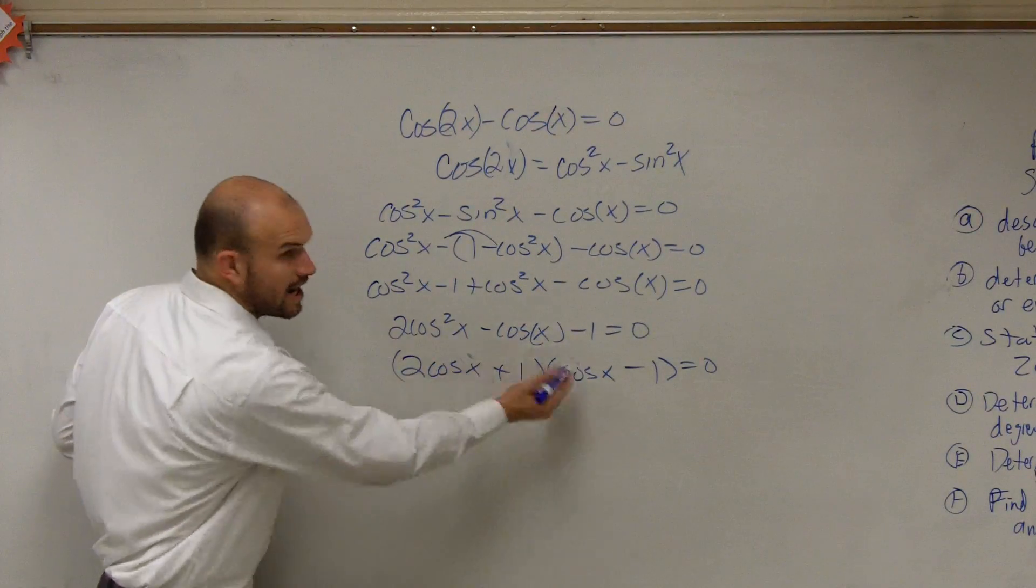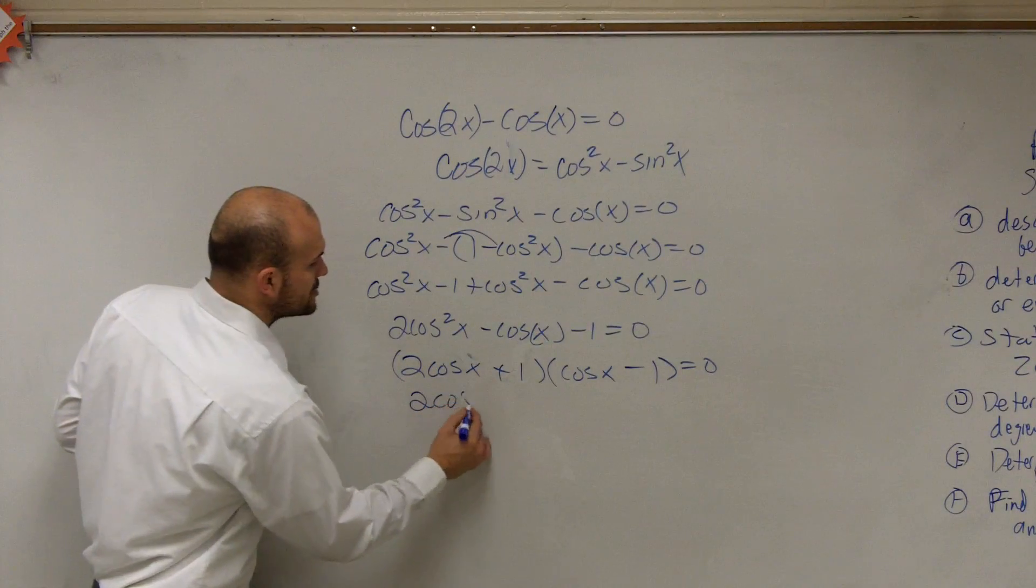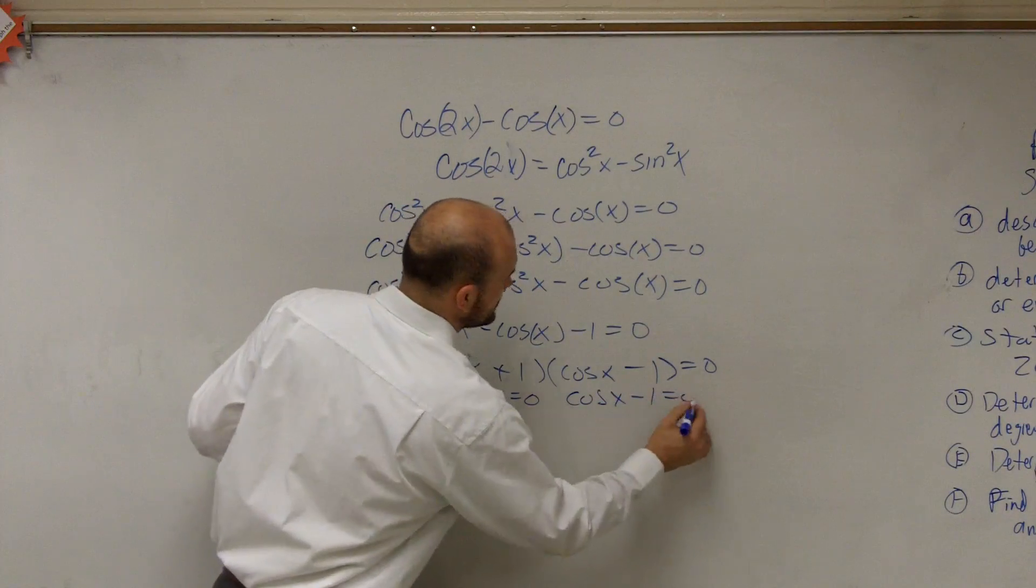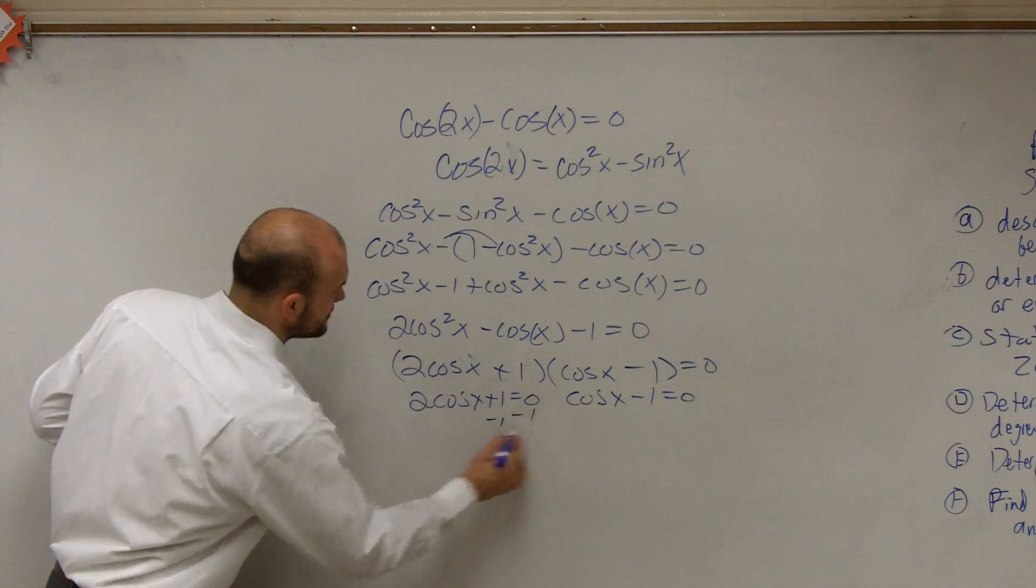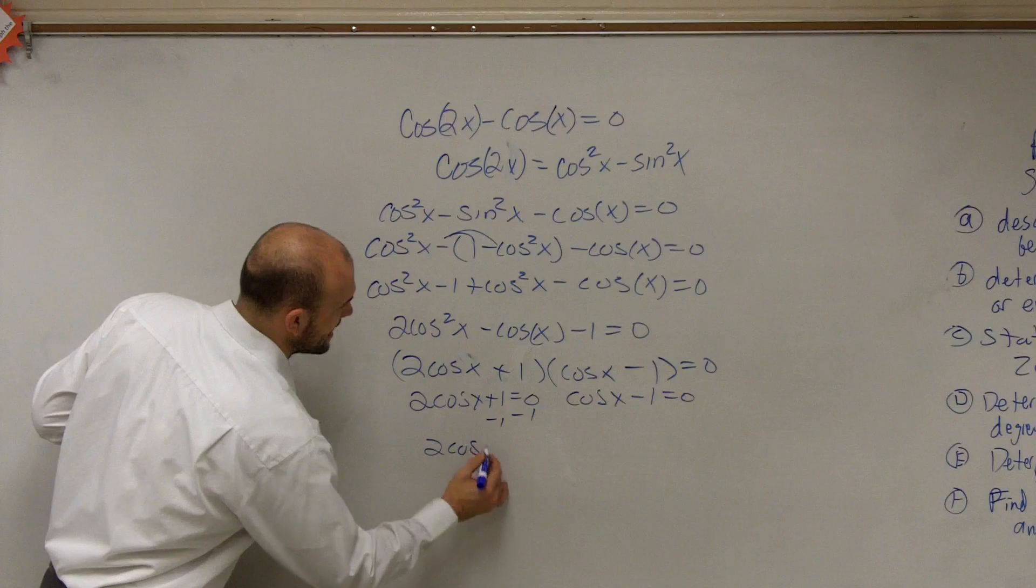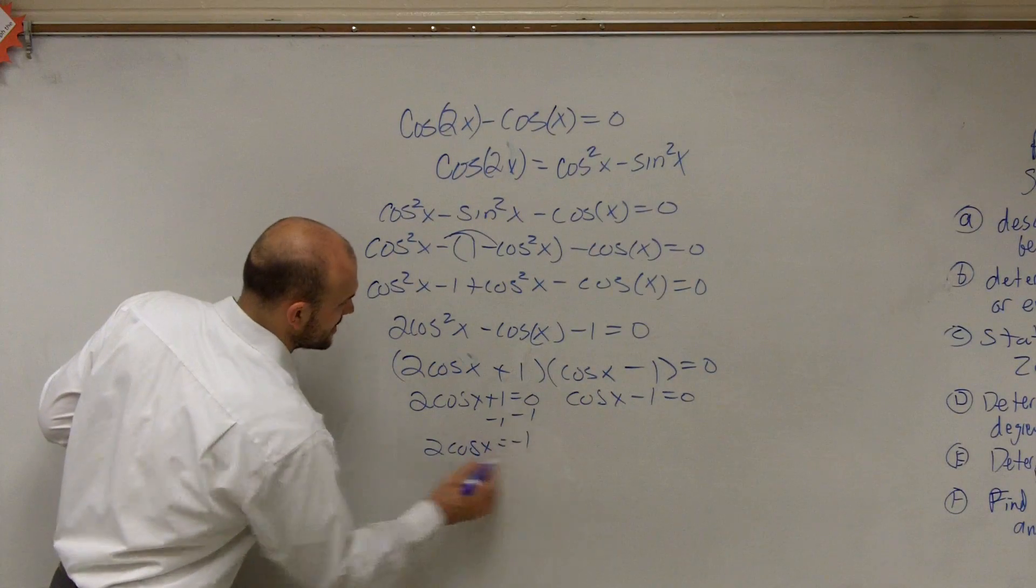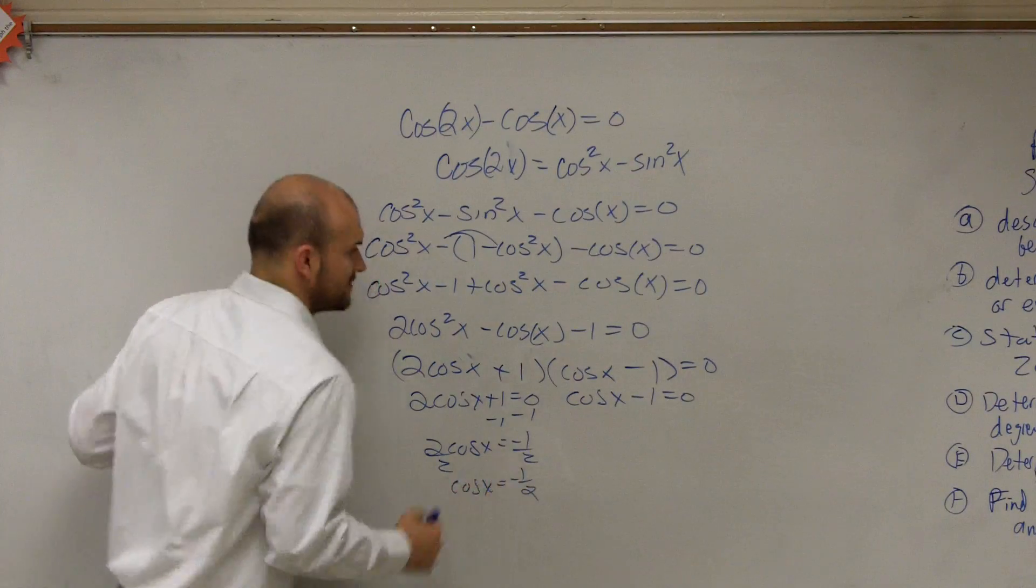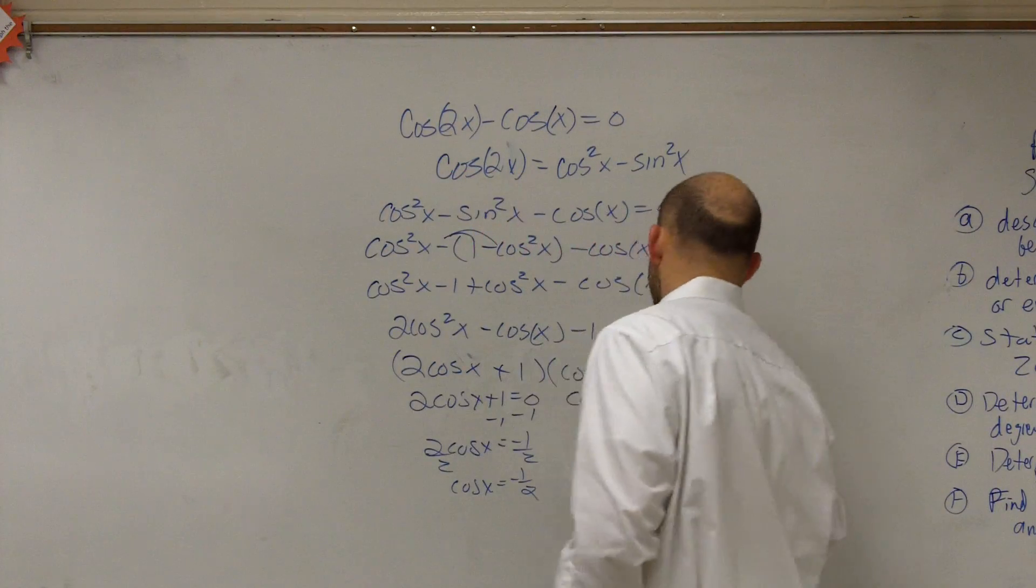So now we have a difference, now we can simplify saying, 2 cosine of x plus 1 equals 0, and cosine of x minus 1 equals 0. Therefore, subtract 1, 2 cosine of x equals negative 1, divide by 2, cosine of x equals negative 1 half, and over here, add 1, and you could say cosine of x equals positive 1.